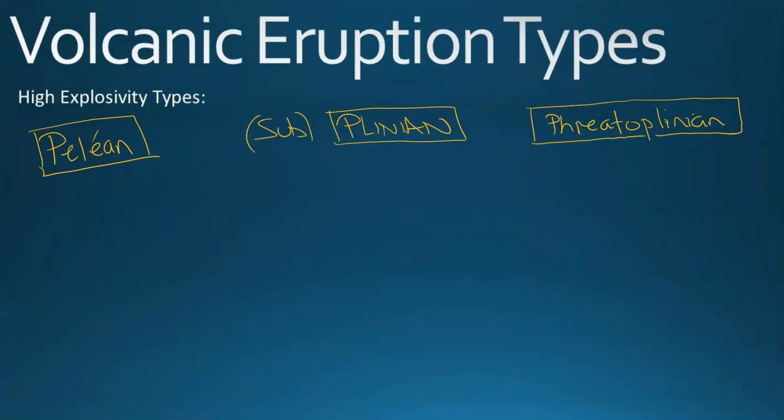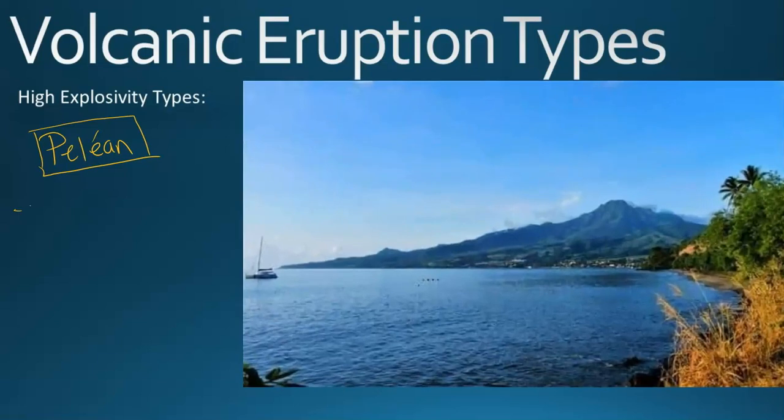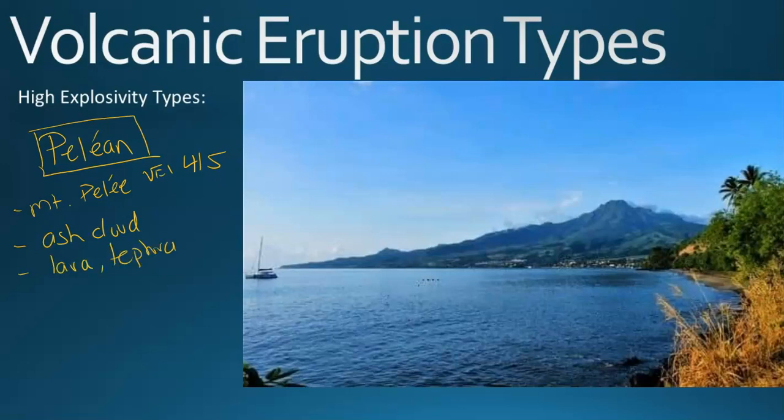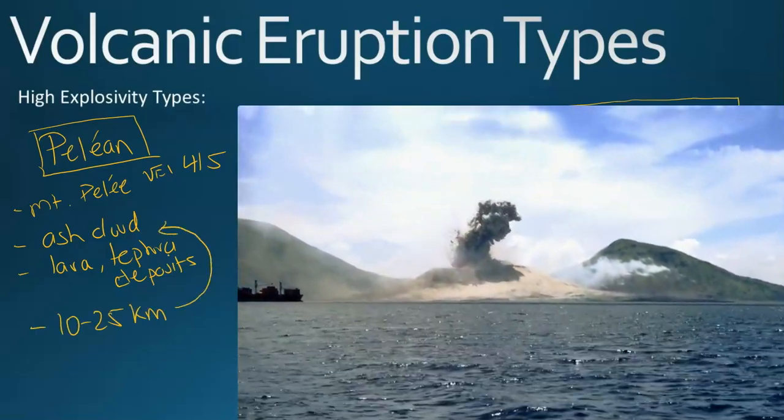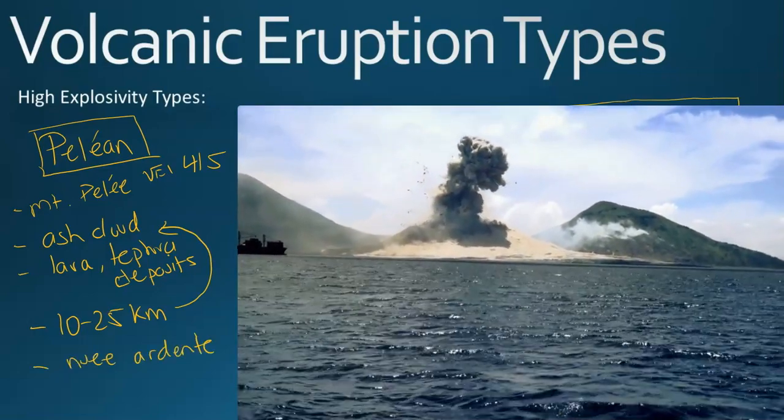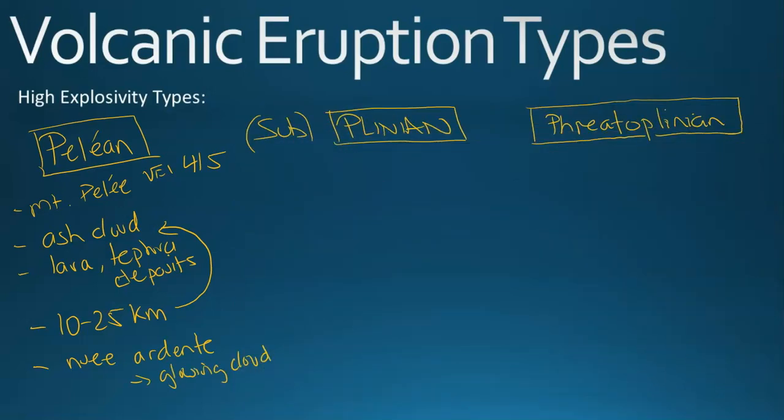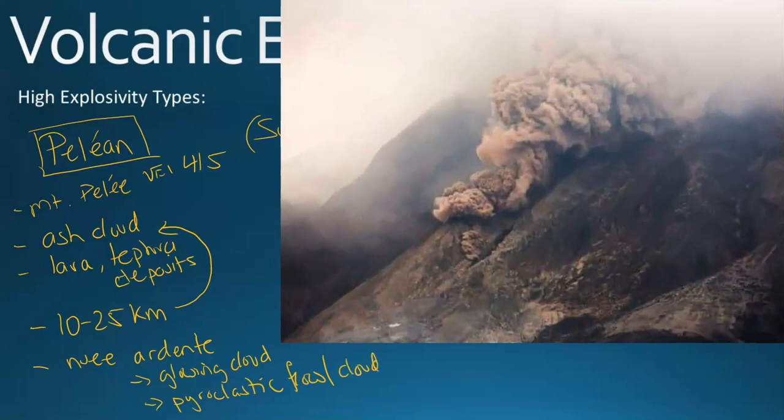Now we're into the high explosivity types of eruptions. Pelean is based on Mount Pelé, and this was a VEI 4 to 5, based on a very large ash cloud, lots of lava, tephra and deposits, looking at atmospheric interruption, atmospheric 10-25 kilometer ash cloud and tephra. This was famous because of the nuée ardente. This is basically a glowing cloud which refers to a pyroclastic flow or pyroclastic cloud, which is ash cloud material which initially goes up with the eruption but then gravity takes it down and forces it down the side of the volcano at speeds of over 100 miles an hour at temperatures over 800 to 1000 degrees centigrade. So extremely dangerous feature of a volcano, which is classically now called Pelean type.